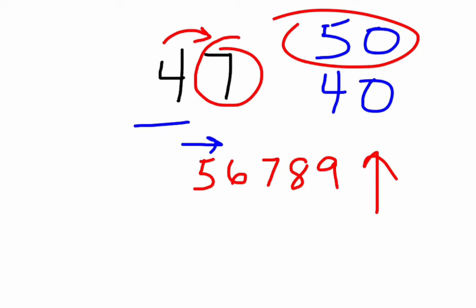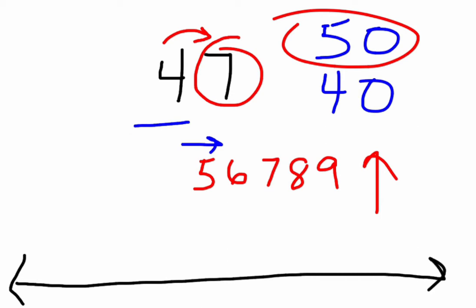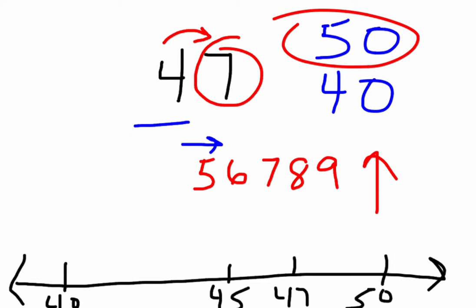Think of a number line — it's another way of thinking of it. You don't need to draw a number line each time, but think of a number line where your two answer choices are plotted: you have a 40, and then you also have a 50. Right in the middle, you'd have a 45. 47 would be about right there, and it is closer to 50. So your answer would be 50 — it would round to 50.